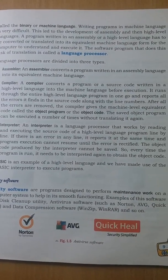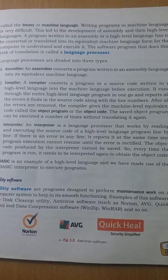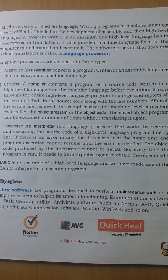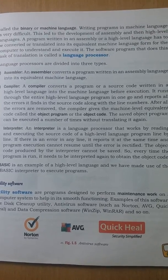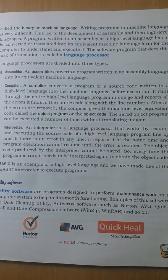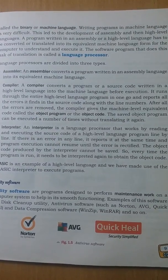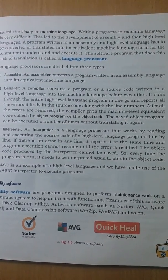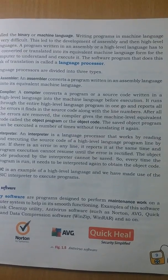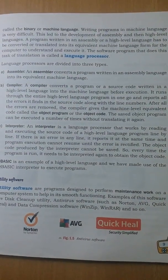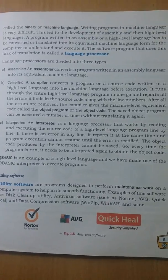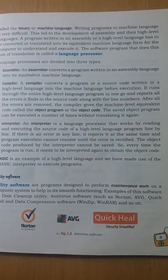The compiler reads the whole program at once, finds all the errors, asks to remove them — that is, debug the program — and after that converts the whole program into machine language. Since it converts the whole program in one go, it is a little bit faster.